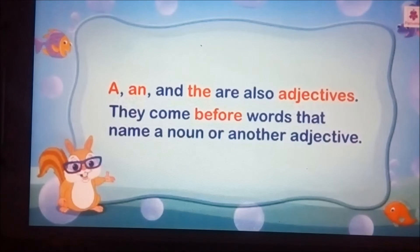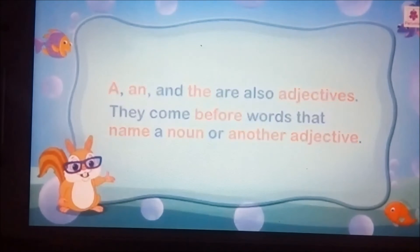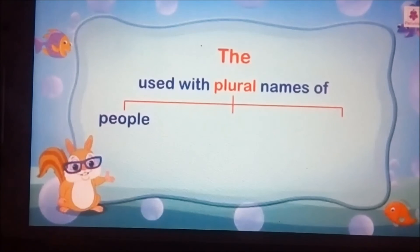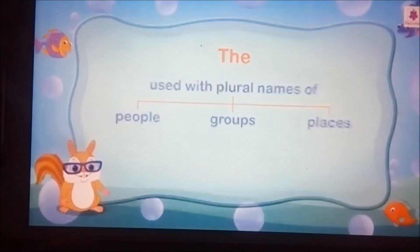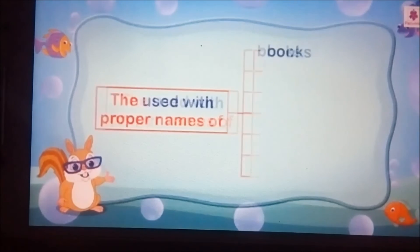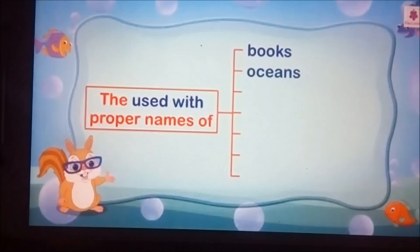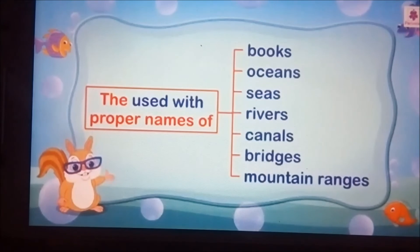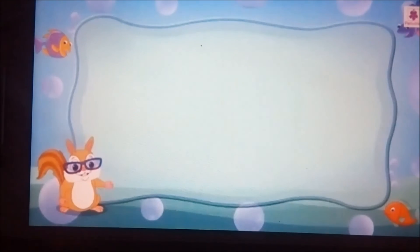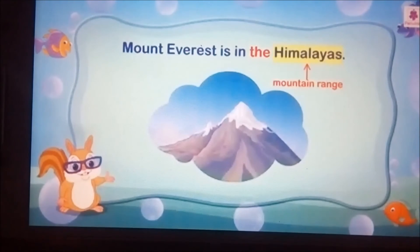We use 'the' with plural names of people, groups, and places. We use 'the' with proper names of books, oceans, seas, rivers, canals, bridges, and mountain ranges. For example, Mount Everest is in the Himalayas.